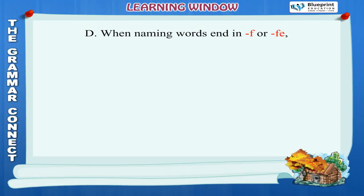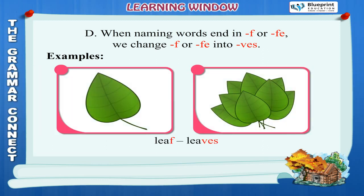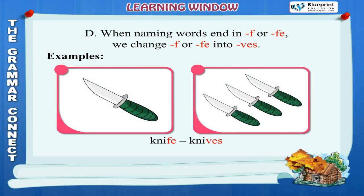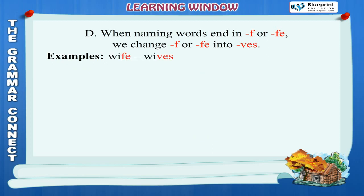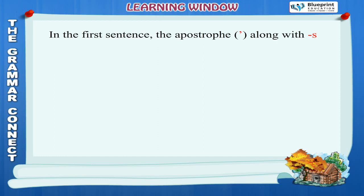Rule D: When naming words end in F or FE, we change F or FE into VES. Example: Leaf → Leaves, Knife → Knives, Wife → Wives.